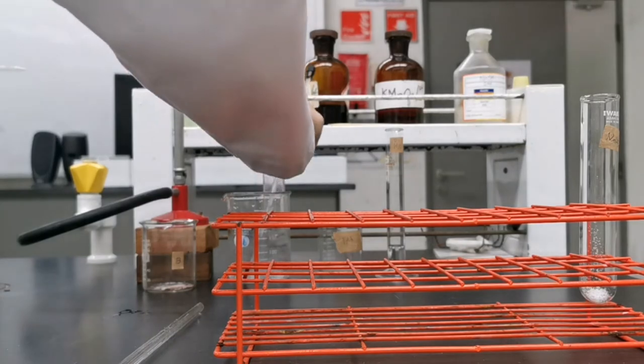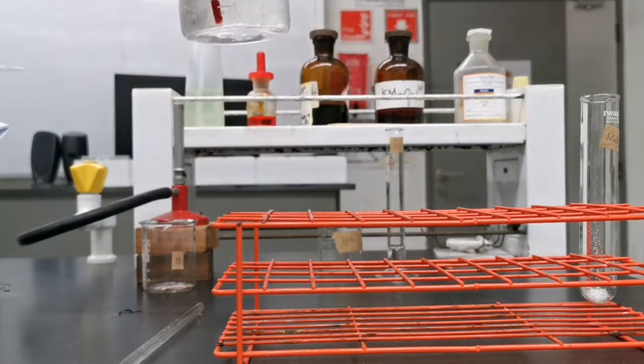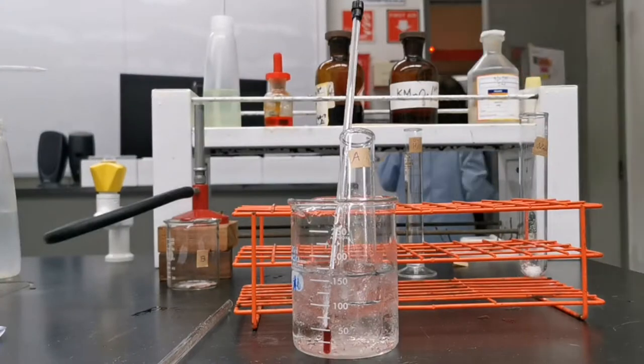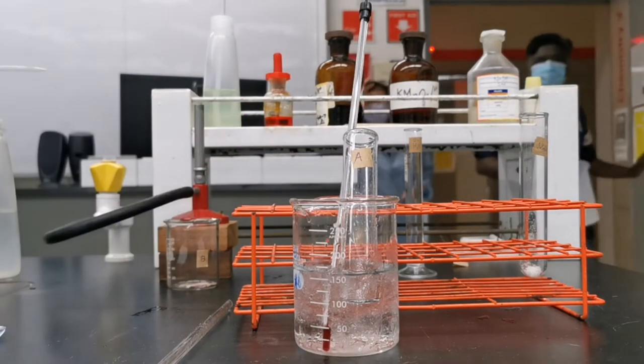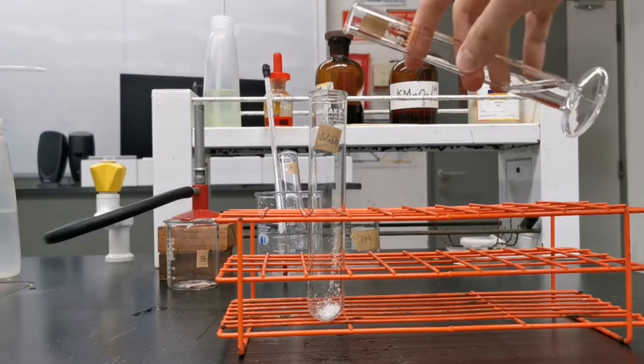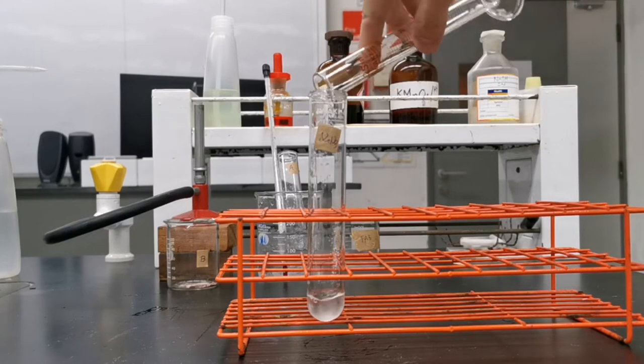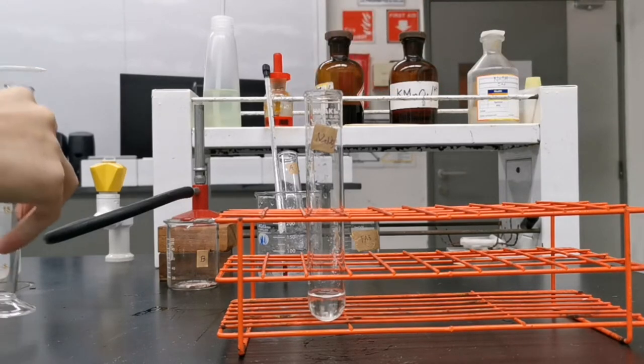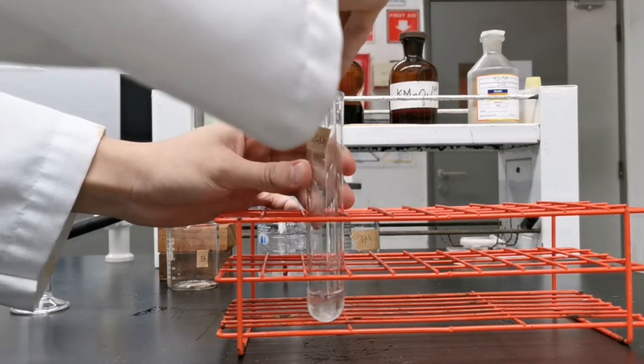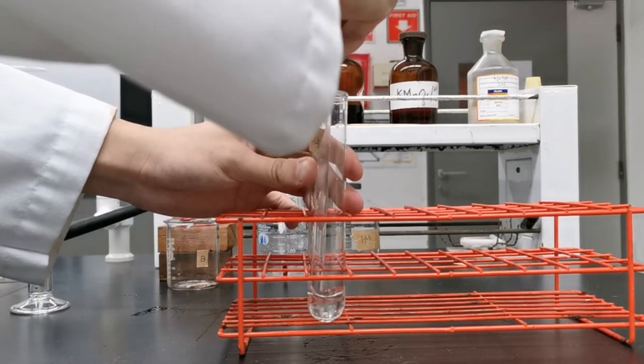This is to ensure the mixture has the same temperature as the ice bath. I then pour 5 mls of distilled water into the sodium nitrite, making sure all of it is dissolved before placing it into the ice bath as well.